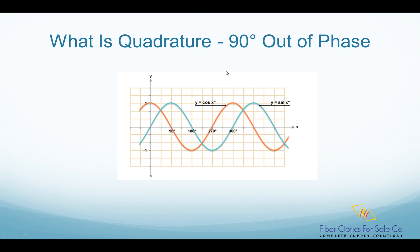In the BPSK constellation diagram, we talked about in-phase and quadrature phase. In-phase means no phase shift — the sine wave starts from an initial phase of 0 degrees. Quadrature phase means a 90-degree phase shift. When we move the sine wave by 90 degrees, we get the cosine wave, called the in-quadrature phase. The sine wave and cosine wave are in quadrature state, and we will use this concept and both waves in DP-QPSK.